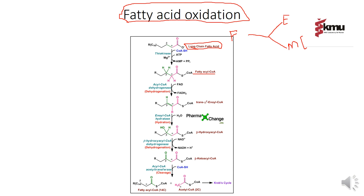In the second step, fatty acyl-CoA is converted to trans-enoyl-CoA. In this step, FAD is converted into FADH2, and the enzyme used is dehydrogenase. This reaction is called dehydrogenation. Remember: this second step — where acyl-CoA converts to trans-enoyl-CoA — is the dehydrogenation step because FAD is converted into FADH2.